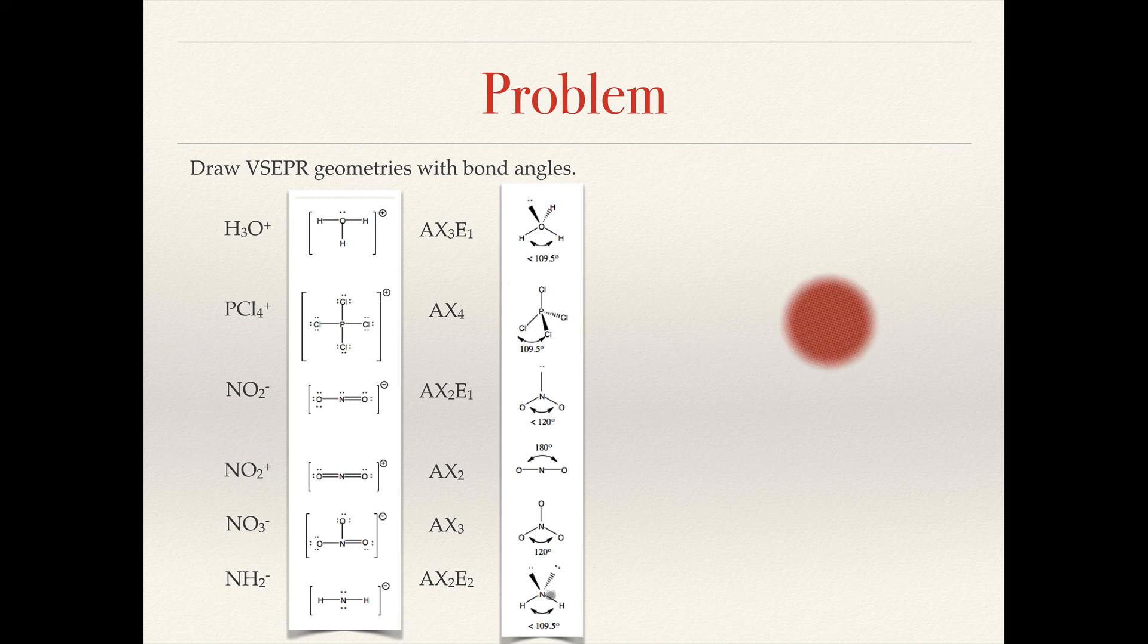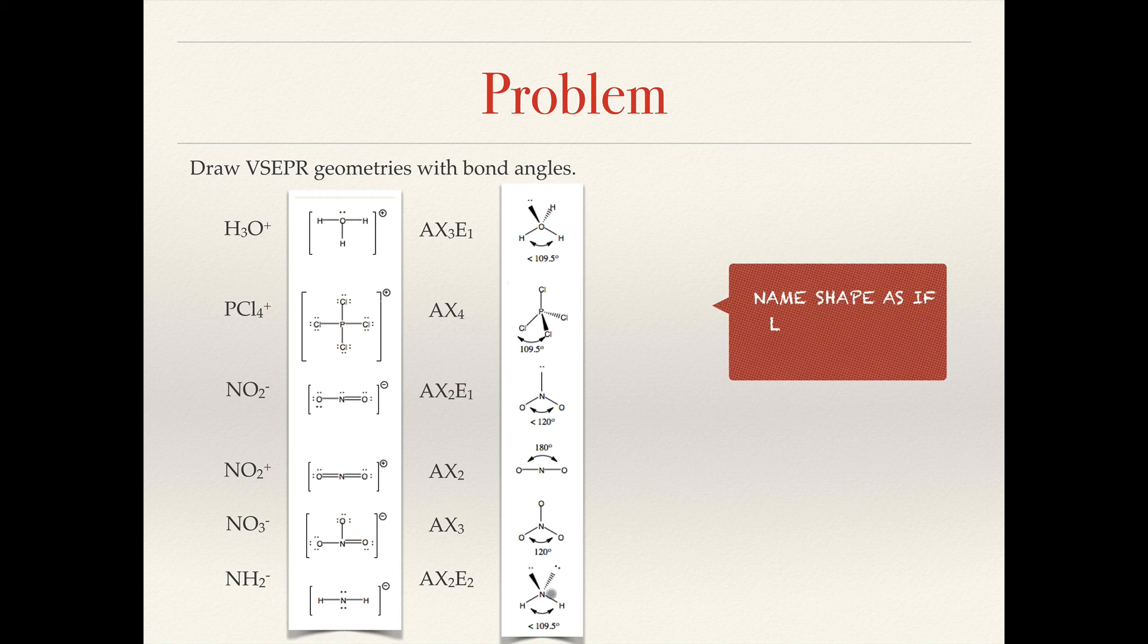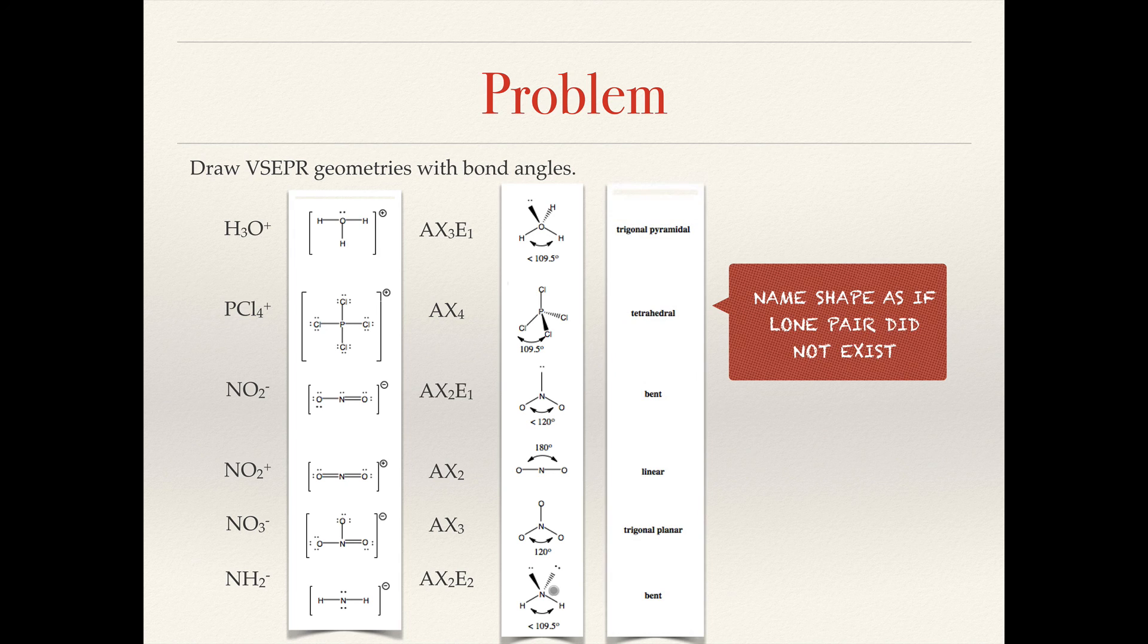So to summarize our results, we acknowledge we always name the shape as if the lone pair did not exist. So this would be trigonal pyramidal, tetrahedral, bent, linear, trigonal planar, and bent. The only times that this comes into play is when we have a lone pair on the center atom. And you can see that reflected here, here, and down here. Good luck.